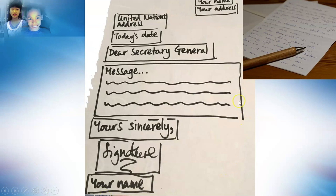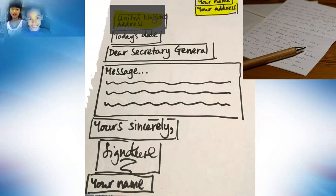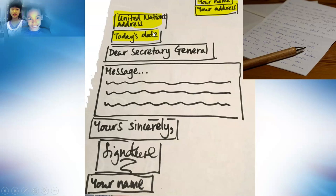Here is an overview of a letter. The first thing at the top right-hand side of your letter is you would write your name. Underneath your name, you would write your address where you live. Then on the left-hand side, underneath your address, you would write the United Nations address because we are writing to the United Nations. Underneath that, you would put today's date. And then you would put the greeting.